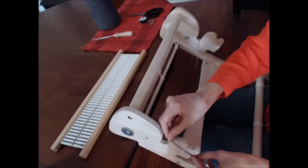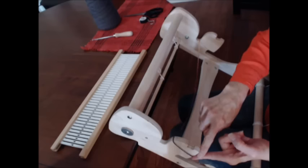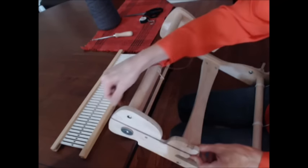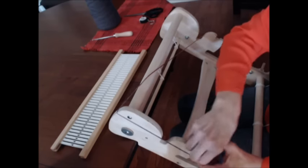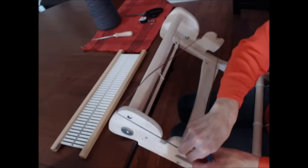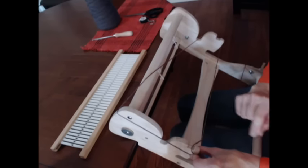I've measured to find out that the starting point here in front of the heddle block that holds the reed, around the back left leg over to the right hand upright and back, is 44 inches. And that happens to be twice the length of the warp that I want to use for my test swatch.